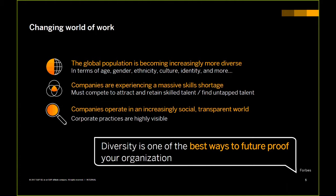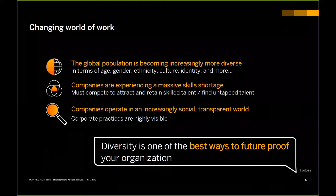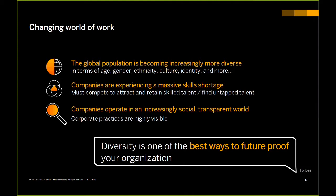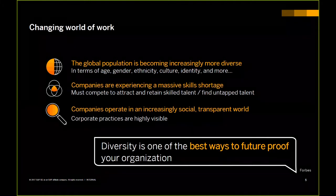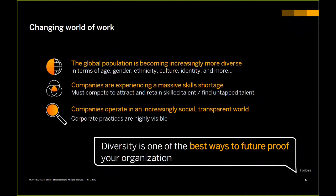Companies are also experiencing massive skill shortages. That's why we see companies embrace things like returnship — trying to get women back into the workforce who opted out years before to raise families and now want to return. Companies are trying to tap into those skills that don't go away with time. And we are so connected nowadays. Everyone probably has at least three devices at any given time. We're incredibly social organizations, and that can impact business.